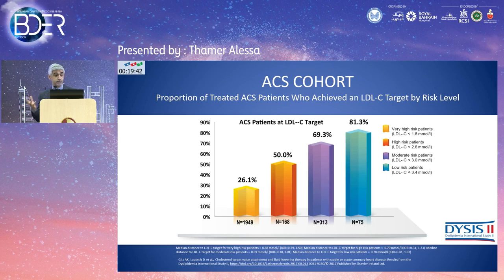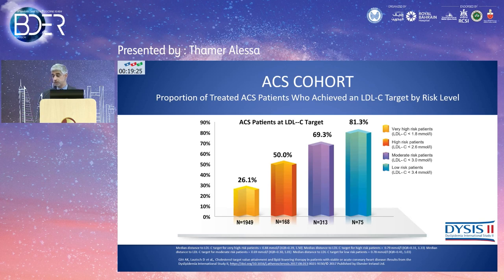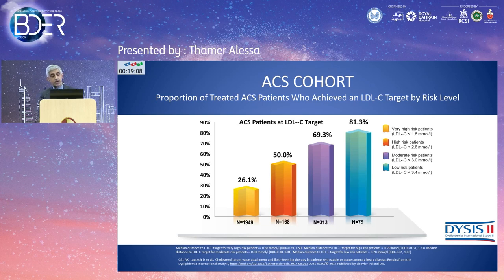Despite knowing these therapies work, a large proportion of patients unfortunately remain uncontrolled. Data from the DYSIS-2 trial in Europe, looking at patients treated with statins or lipid therapies, shows poor achievement of LDL targets — even by older, looser standards. Only 26% of very high-risk individuals had controlled LDL levels, compared to 81% in the low-risk group, because very high-risk individuals must reach LDL less than 1.8, which is difficult with single therapy.